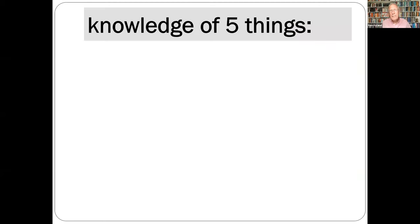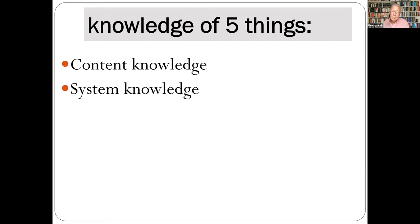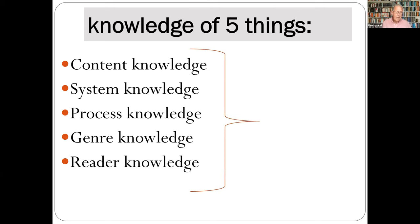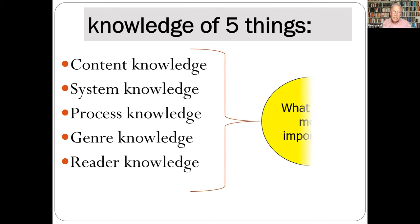We need content knowledge — what are we going to write about? System knowledge — how to put this together; in the UK it's called SPAG: spelling, punctuation, and grammar. We need process knowledge — how to construct a text through drafts and revisions. Genre knowledge — how the content is organized as a message. And reader knowledge — how to anticipate the reader's attitude and what they need to know.